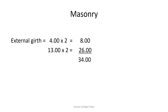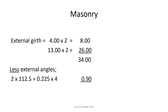The mean girth can also be calculated from the internal face, in which case the allowance for the angles is added, not deducted. In Scotland, a technique known as the 'over and between' is also sometimes used.